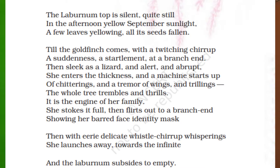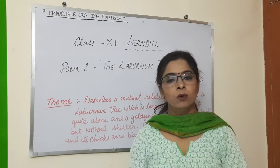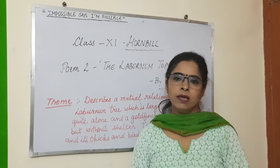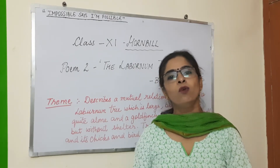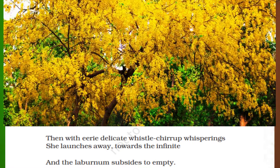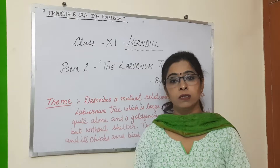Then with airy delicate whistle-chirrup whisperings — the bird is singing. First her sound was described as a twitching chirrup, and now the poet says whistle-chirrup, meaning she is calling like a whistle, and 'whispering' means slowly, softly. She launches away towards the infinite — she flies off, away towards the infinite, meaning you cannot tell where she has gone, she goes so far away.